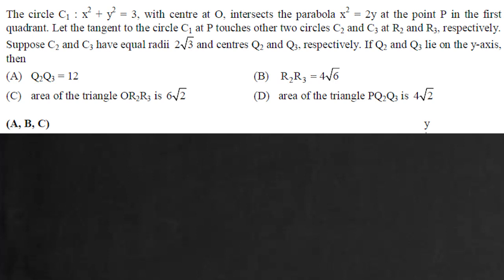Here the question is: a circle with center at origin intersects the parabola x² = y at point P in the first quadrant. Let the tangent to circle C₁ at P touch the other two circles C₂ and C₃ at R₂ and R₃ respectively. Suppose C₂ and C₃ have equal radius 2√3 and centers Q₂ and Q₃ respectively. If Q₂ and Q₃ lie on the y-axis, then we have to find which of the following options are correct.